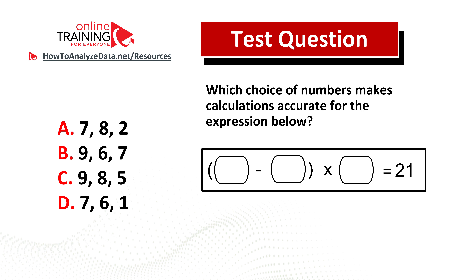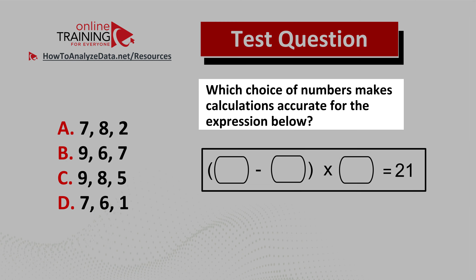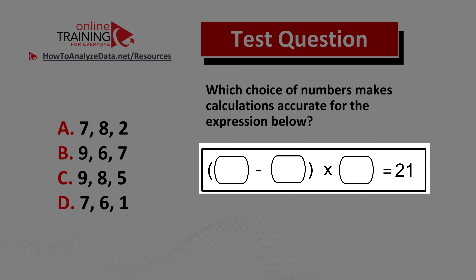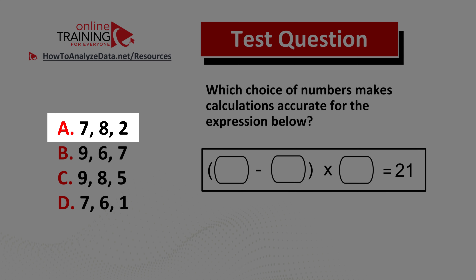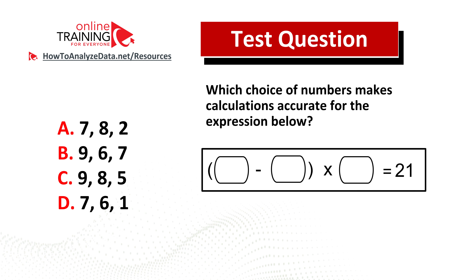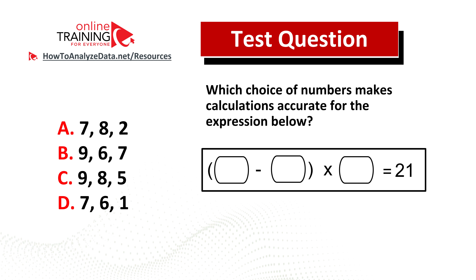Let's look at an interesting problem which tests your ability to do mental math. Which choice of numbers makes calculations accurate for the expression below? You have an expression where the second number is subtracted from the first number inside parentheses, then multiplied by the third number, and the result equals 21. The four choices are: choice A: 7 8 2; choice B: 9 6 7; choice C: 9 8 5; and choice D: 7 6 1. You cannot use a calculator. Pause this video to try on your own.